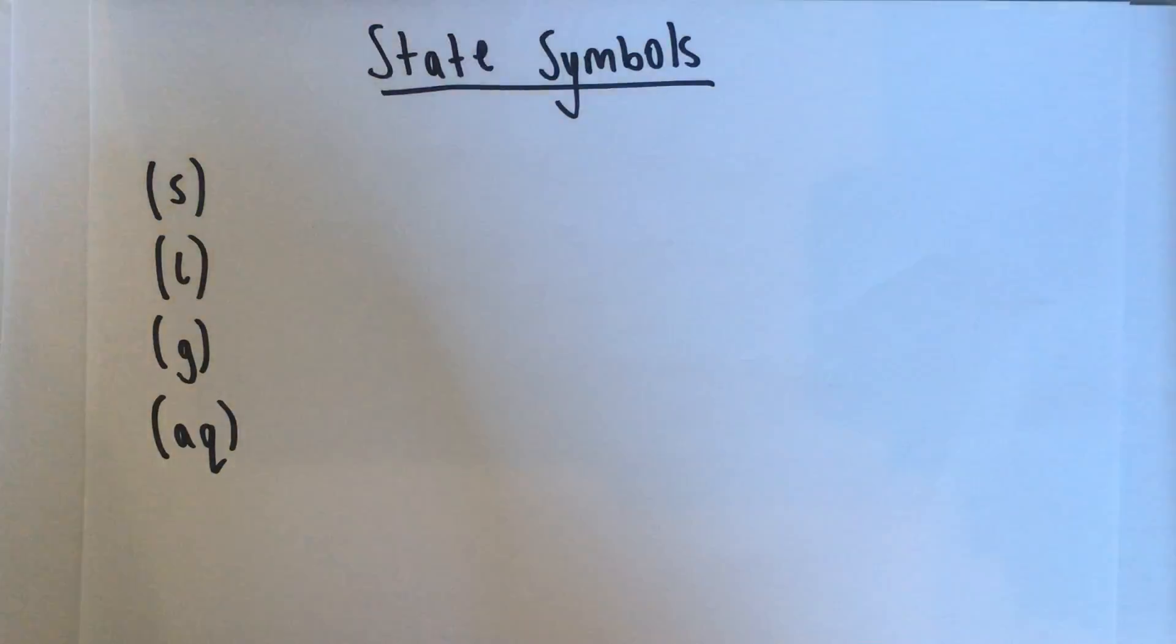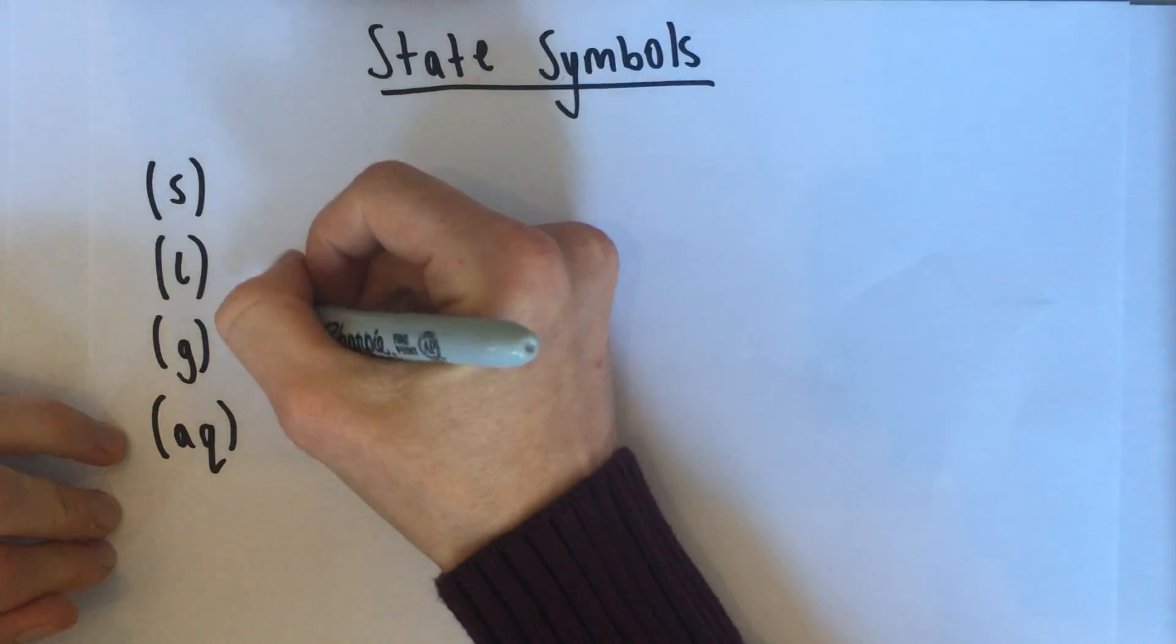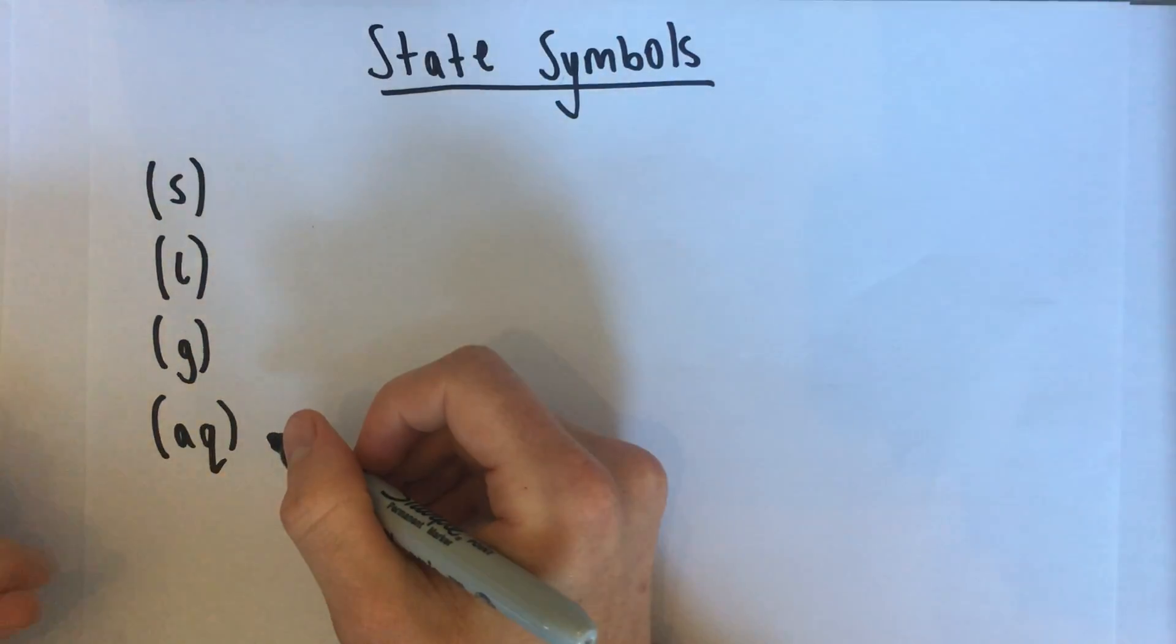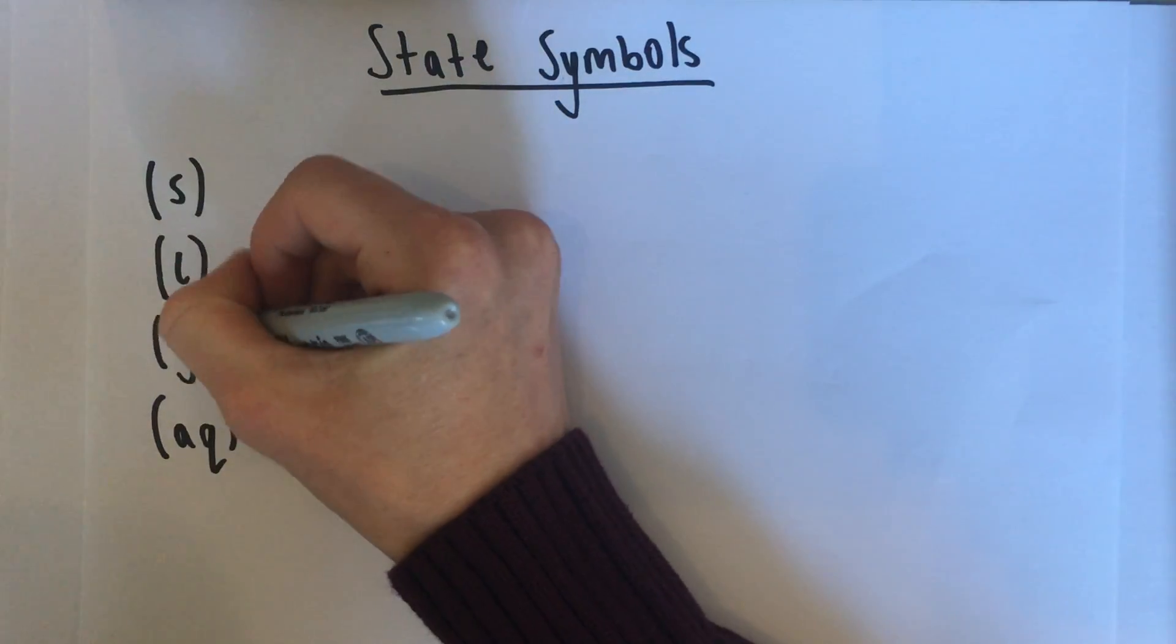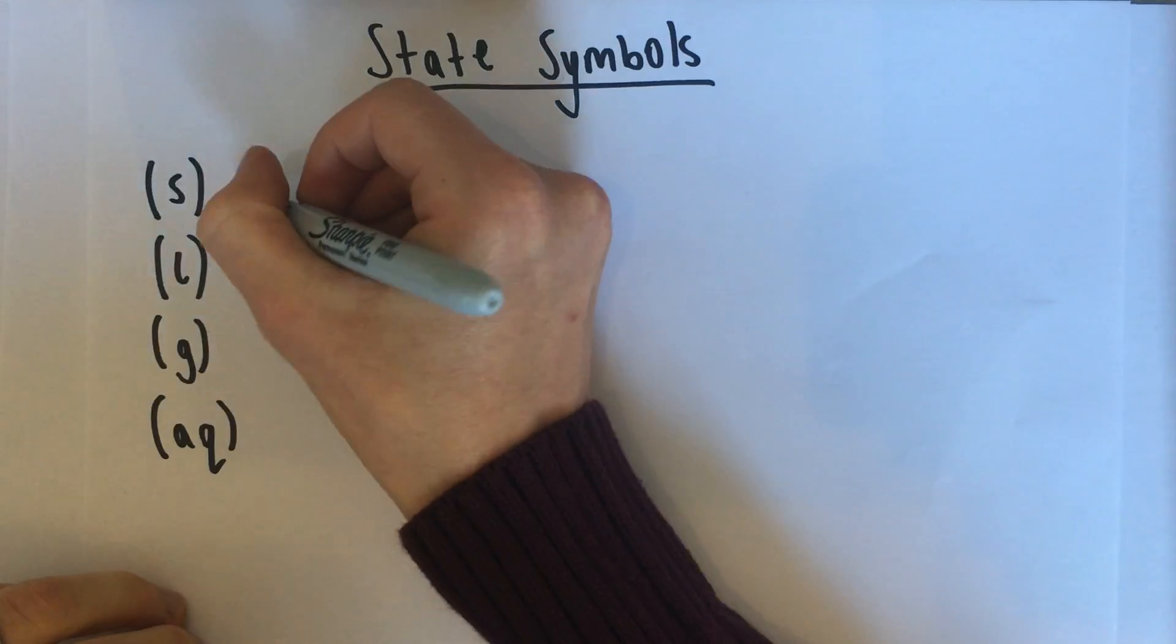State symbols is one of those great little mini subtopics in chemistry, really easy to get hold of. There are four state symbols. They're shown in some symbol equations. They're lowercase letters in brackets, quite obviously from looking at them.